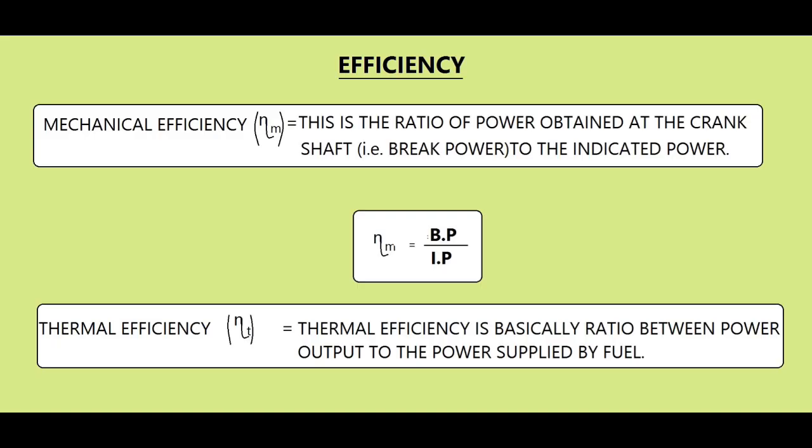Mechanical efficiency is the ratio of power obtained at the crankshaft — that is brake power — to the indicated power. Thermal efficiency is basically the ratio between power output to the power supplied by the fuel.